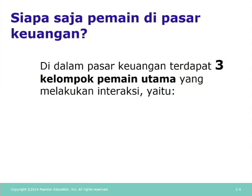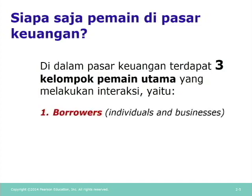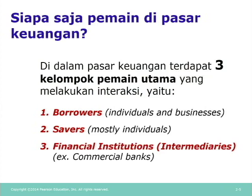Di dalam pasar keuangan ada tiga kelompok pemain utama yang melakukan interaksi perdagangan. Yang pertama adalah borrowers atau peminjam, biasanya berupa individu atau para pengusaha. Yang kedua adalah savers atau orang yang menanamkan uang atau penabung, mostly individuals. Dan yang ketiga adalah financial institution, atau biasa disebut juga dengan financial intermediaries, perantara keuangan.